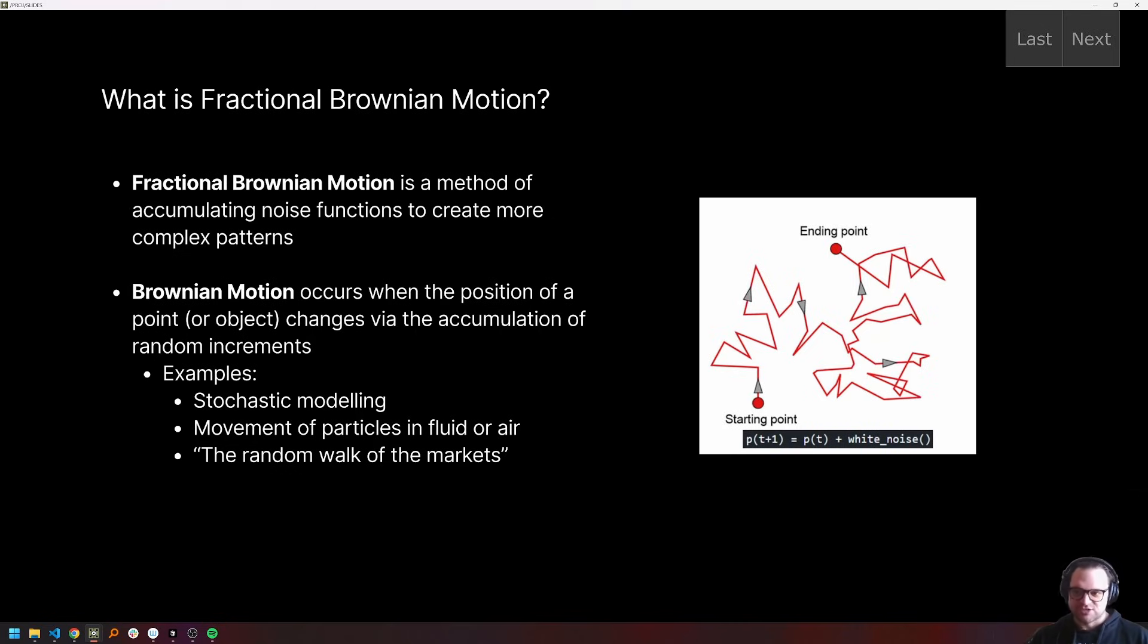So this little chart just kind of shows, you can think of each step as being one straight segment on this chart, but the direction and the length of each segment is determined randomly at each point. So you always know where you're going to start, which is where you ended the last step, but you don't know which direction you're going to go in or how far you're going to step until you actually perform that simulation step. And so the pseudocode for something like this is the position at time t plus one is going to be equal to the position at time t plus some white noise or a random function. And that is Brownian motion at his most simple.